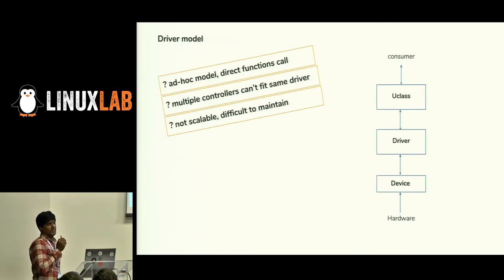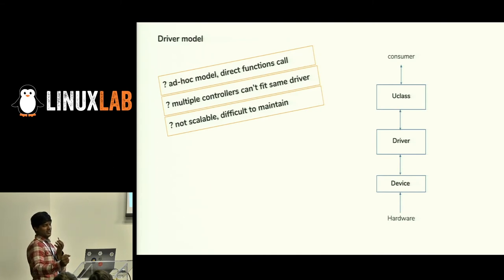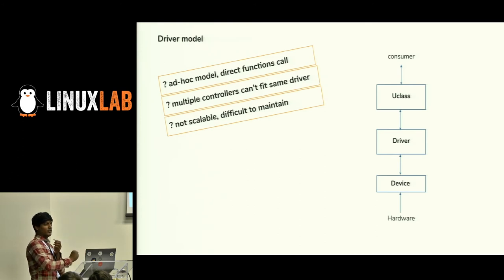The driver model treats each device as a driver and a U-Class. Like a typical Linux device model, it is homogeneous. For example, we have an SPI controller: SPI controllers are categorized as a U-Class core, and individual controller drivers (like Zynq, OMAP, or TI) are the U-Class drivers. In UBoot, all drivers are U-Class drivers. If there's an MMC subsystem, the MMC U-Class driver is the core, and individual controllers from Zynq or TI are U-Boot drivers — all talking to the U-Class driver. That is what I call homogeneous.